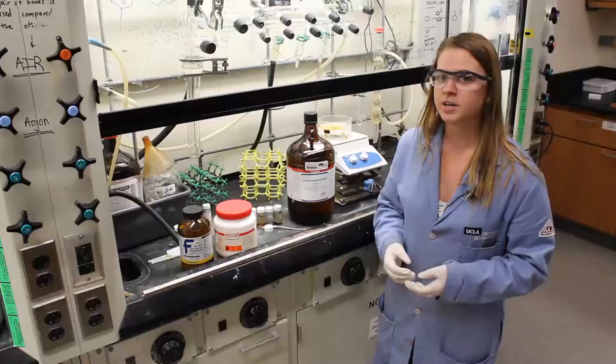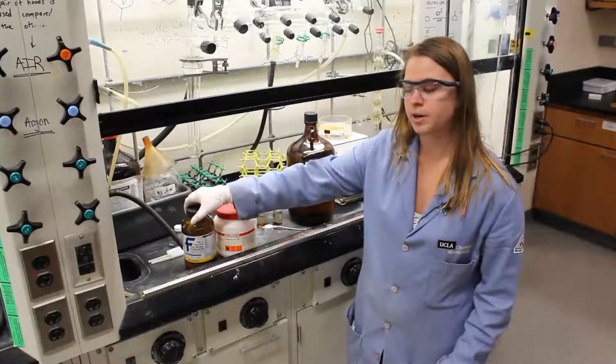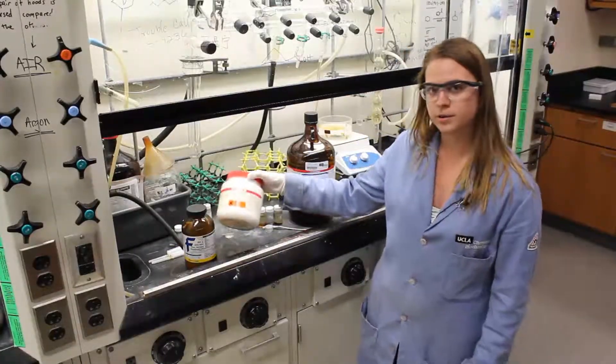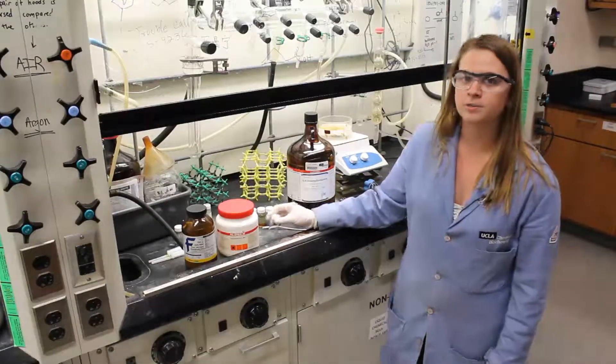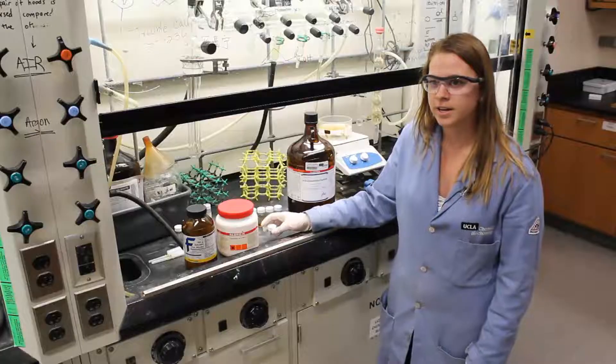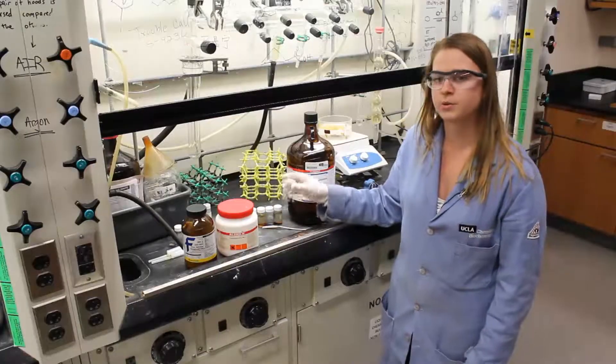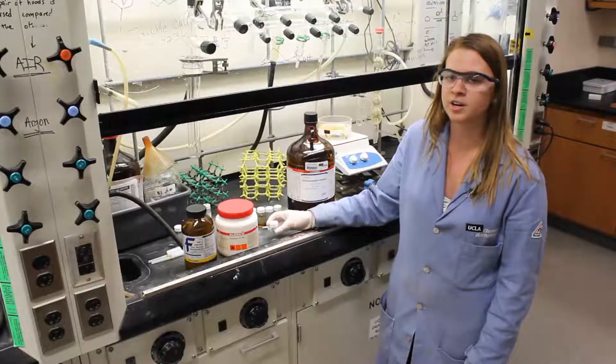In order to make it, you would mix zinc, which is the inorganic component, with terephthalic acid, the organic component, in a vial with either DMF or DEF as a solvent. And after we've swirled it and make sure we have a homogeneous solution, we're ready to put it in the oven.